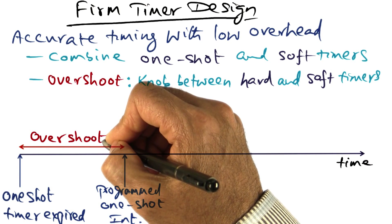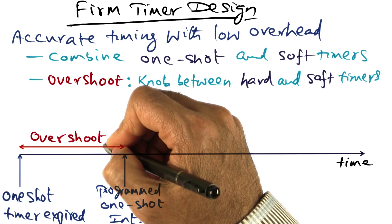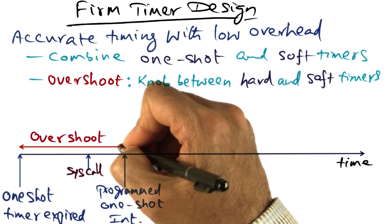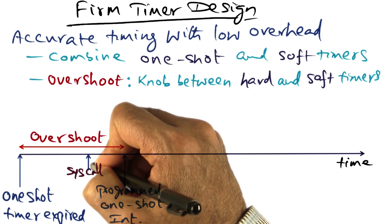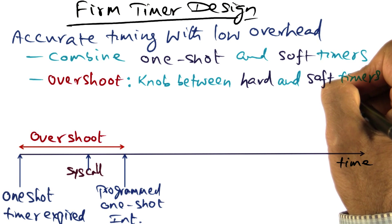You may wonder, what is the advantage of this overshoot parameter? Well, within this overshoot parameter window, there could be a system call, which is a soft interrupt.